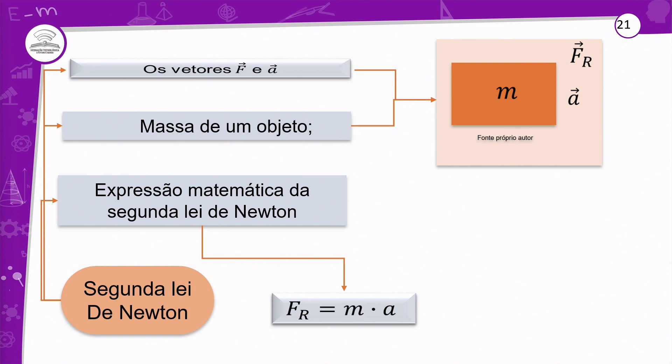Se você estiver empurrando um bloco, pega a massa e multiplica pela aceleração. Se estiver empurrando dois blocos, soma as massas e multiplica pela aceleração — e assim por diante. A força resultante é obtida somando as massas e multiplicando pela aceleração que os corpos adquirem — porque como estão juntos, vão acelerar na mesma proporção. Se um carrinho está passando e você joga um bloco sobre ele, o carrinho aumenta sua massa e, se a força não aumentar, a aceleração diminui.